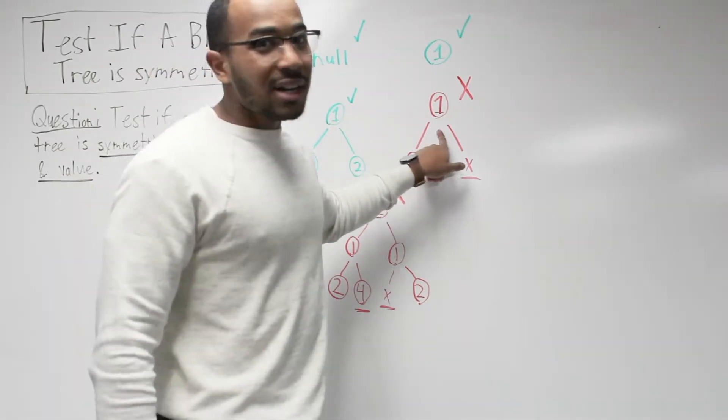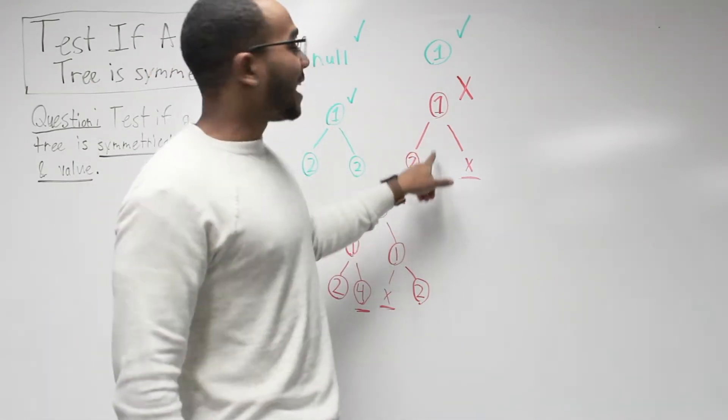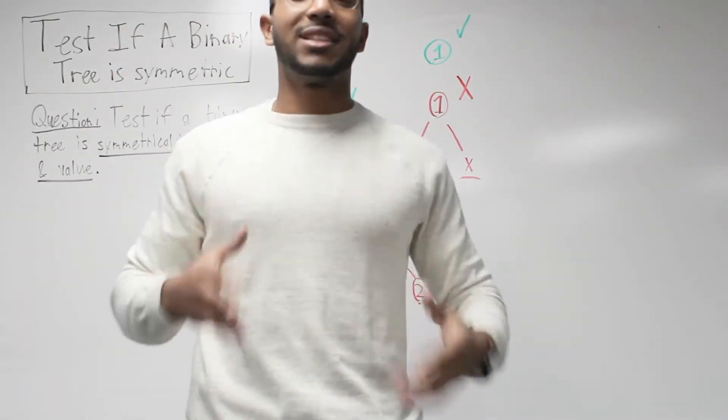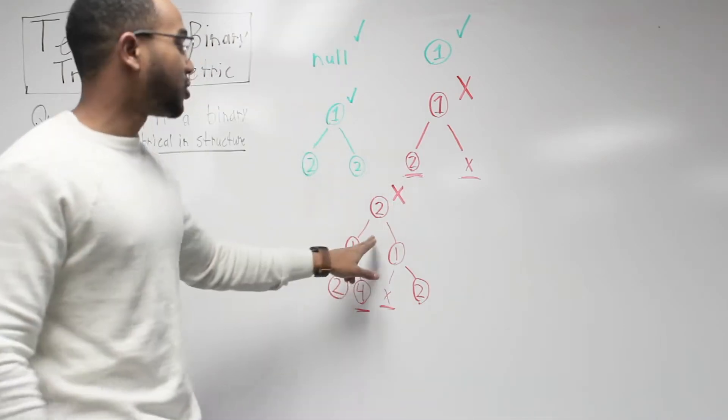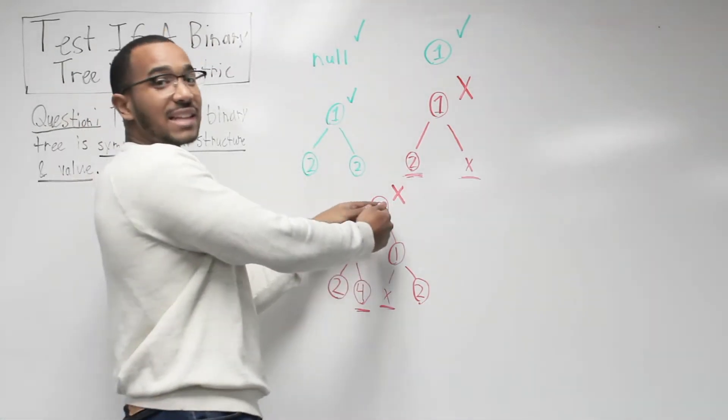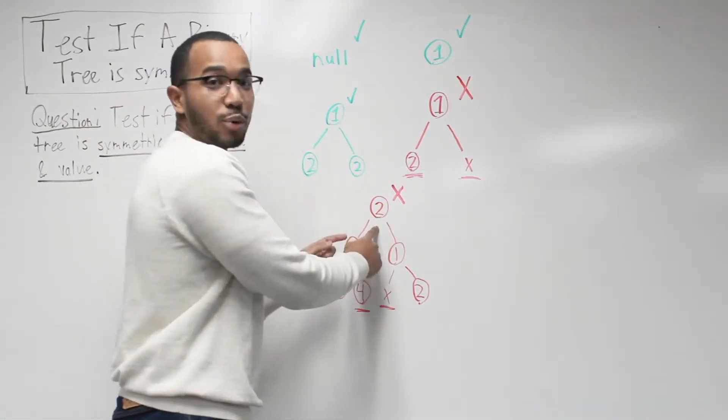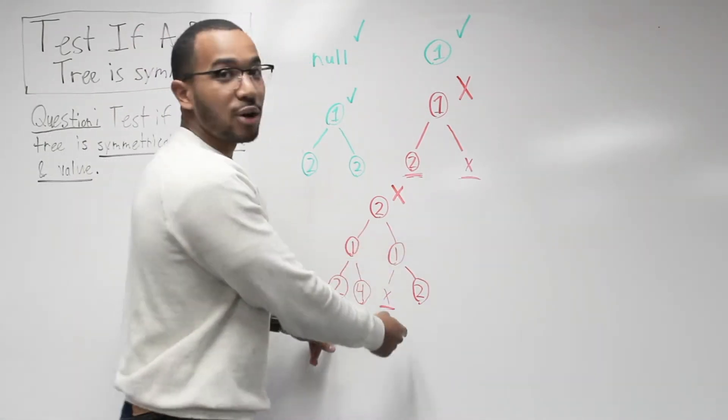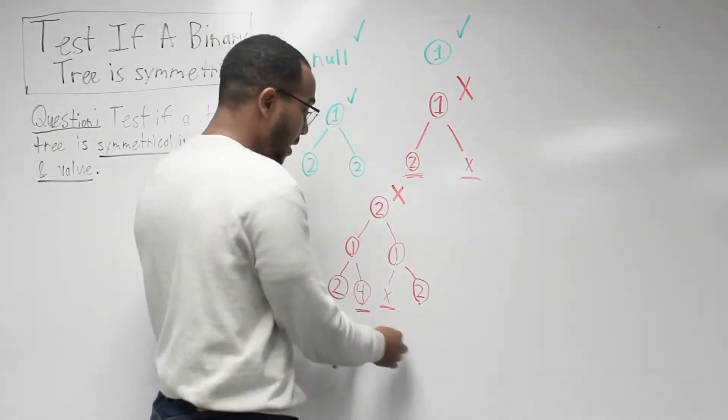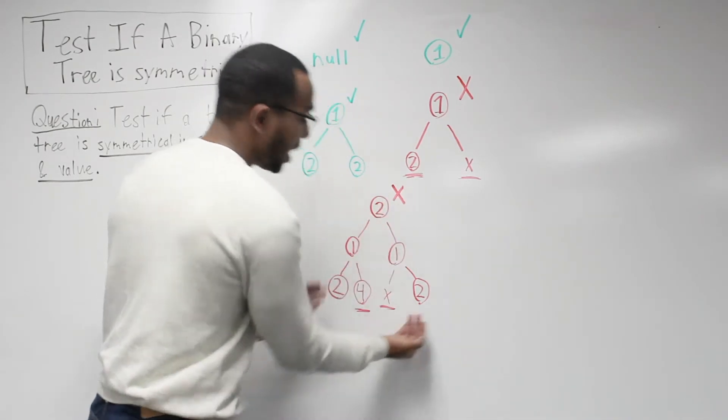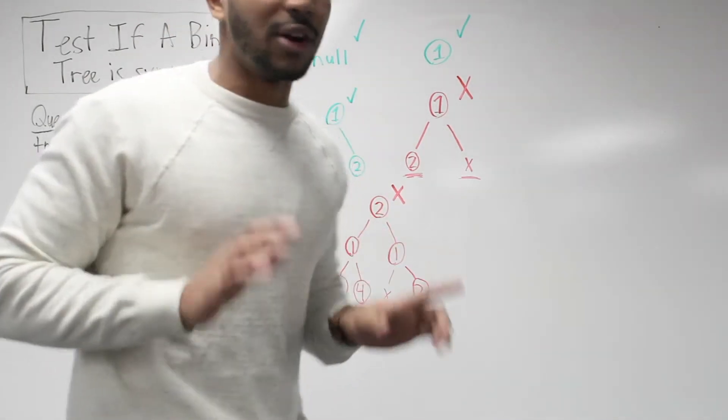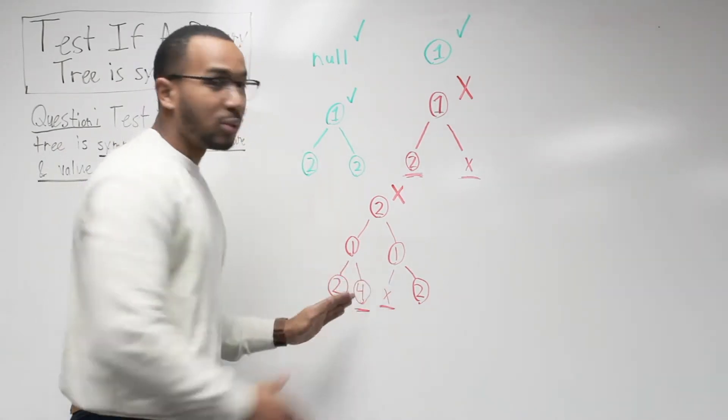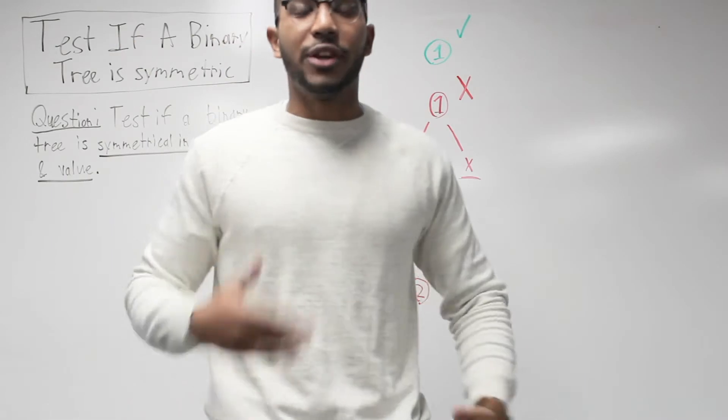Here is an example where things go wrong. We see one, its left value is two and its right value is null. This is where if we fold the tree on itself, we're not going to have equivalent values. It stays symmetrical here with root of two, left and right one, it stays symmetrical here, but where do we fail?